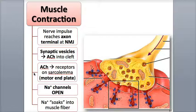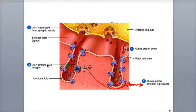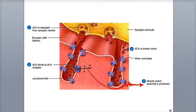The next step, B, is binding. Two molecules of acetylcholine bind to an acetylcholine receptor on the motor end plate. These receptor proteins are actually gated sodium ion channels. These channels are normally closed, but when acetylcholine binds to them, they open.